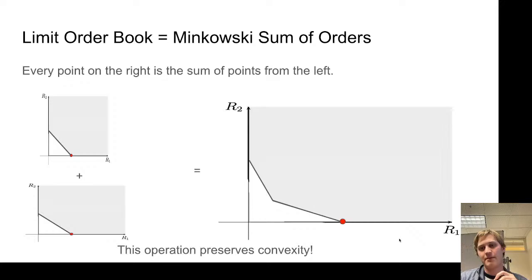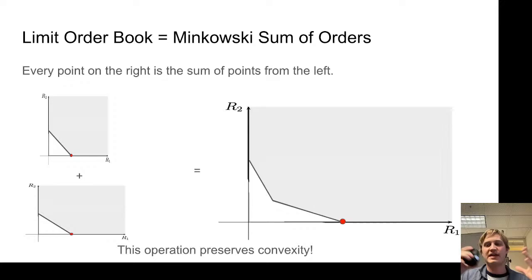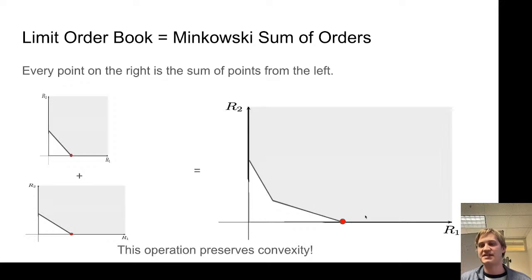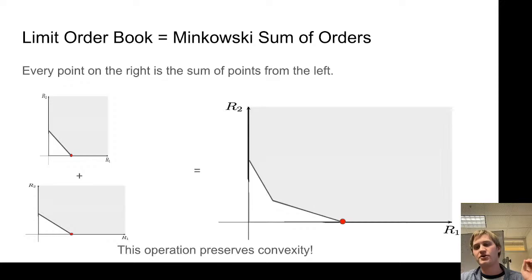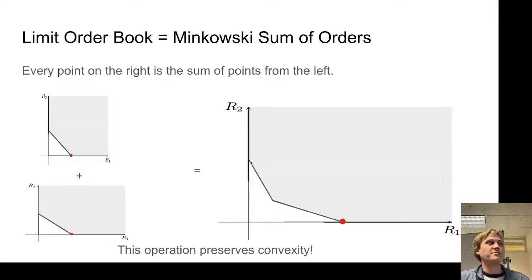This operation called the Minkowski sum is another fact emphasizing that we can do convex optimization. The Minkowski sum operation preserves convexity. So no matter how many orders I have in a limit order book, I can just take the Minkowski sum of all their liquidity profiles and get a big convex representation of all the liquidity. Furthermore, I could even take the Minkowski sum with a traditional Uniswap CFMM sitting alongside, and I would again get something convex — it might be a little curved, but still a convex shape.